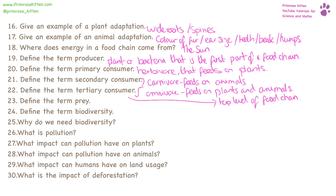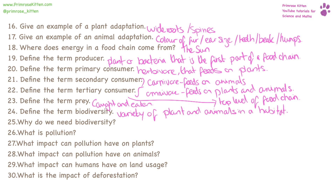A prey is an animal that is caught and eaten. Biodiversity is a variety of animal and plant life in the world or in habitats. Biodiversity is the foundation of a healthy ecosystem, which is very important for human wellbeing and life on earth.